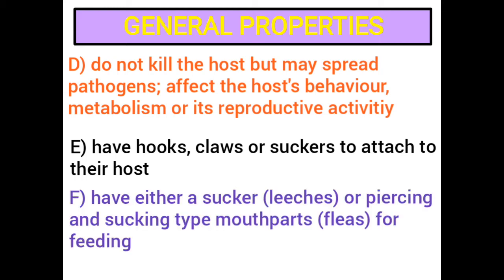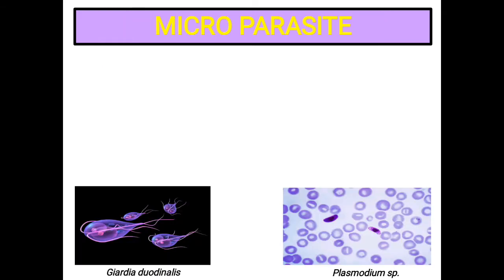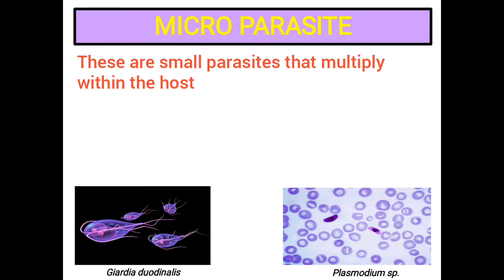Generally, parasites have either a sucker or piercing-and-sucking type mouthparts for feeding. Both adults and young can be parasitic. In some cases, the young are parasites but the adult is not. Now I will discuss about different types of parasite with examples.